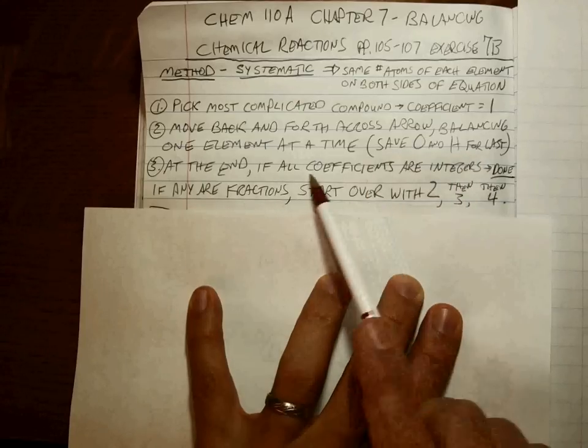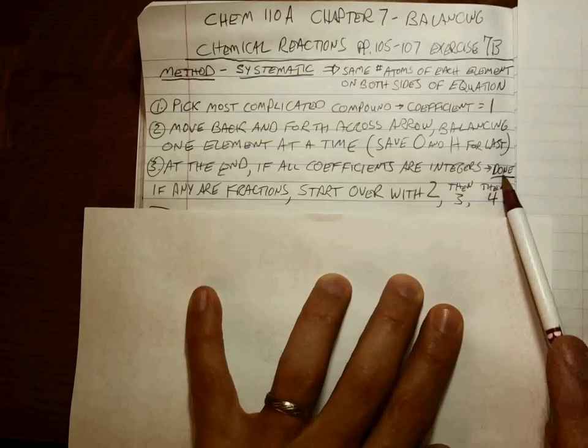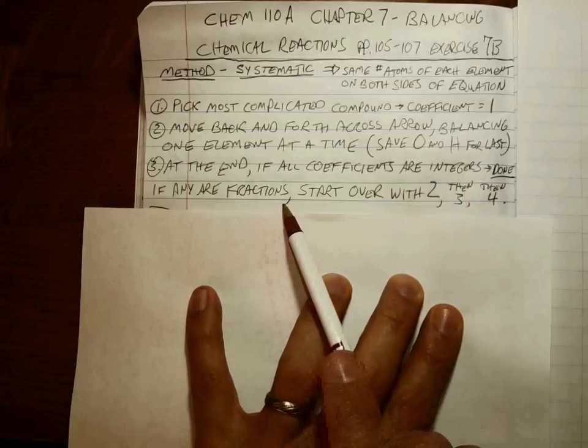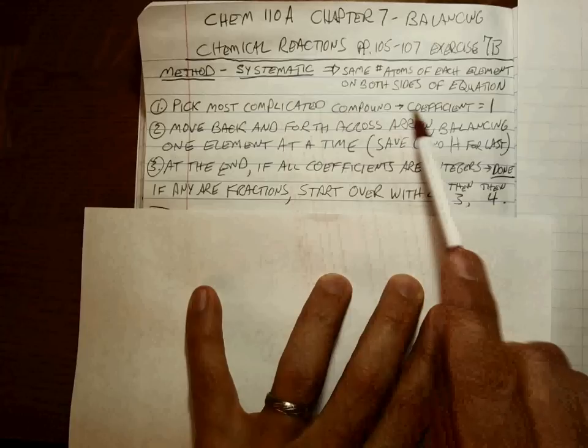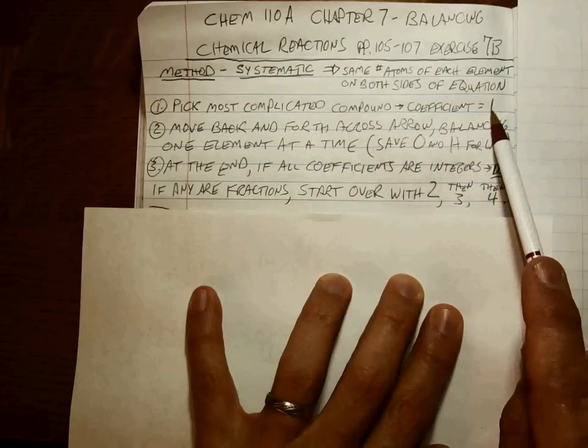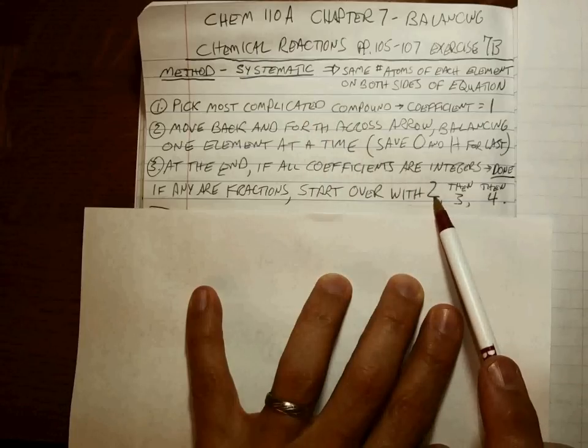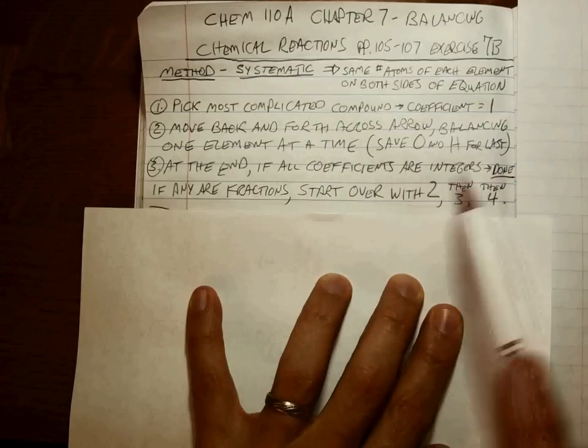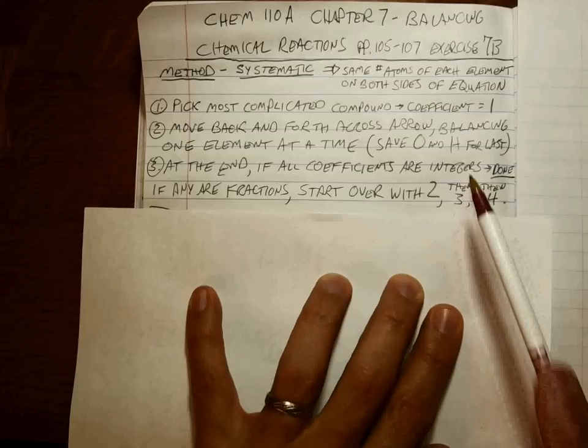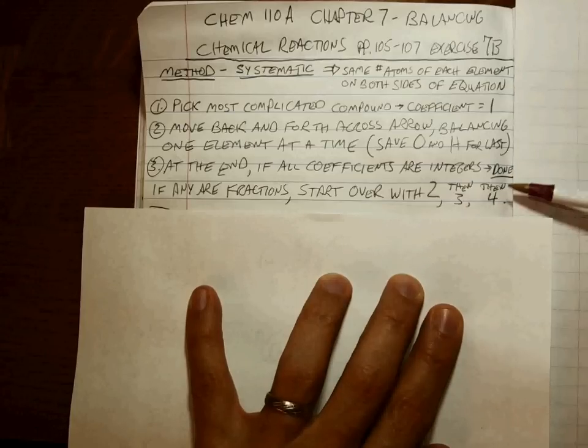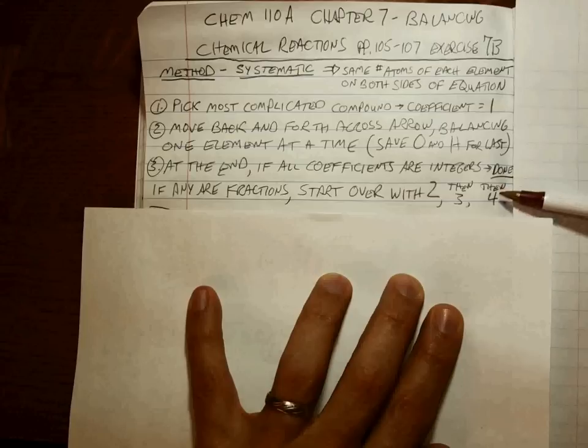After you're all done, if all the coefficients are integers, counting numbers, then you're done. But if any are fractions, start over at step 1, making that most complicated compound coefficient of 2. And if that doesn't work, try 3. And if that doesn't work, try 4. I'm not going to give you a problem in this course that 2, 3, or 4 won't work. There's plenty of reactions that don't work that way, but we won't give you one any more complicated.